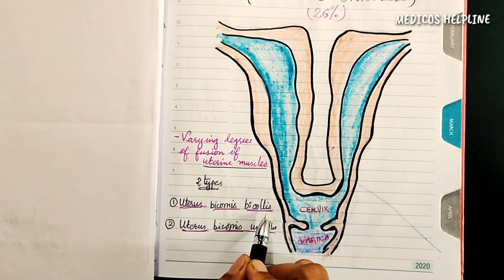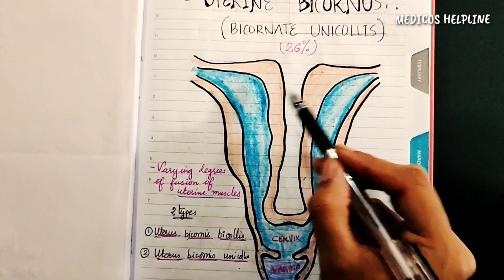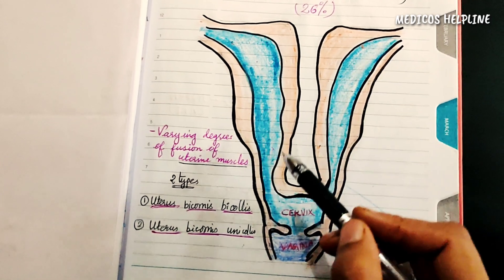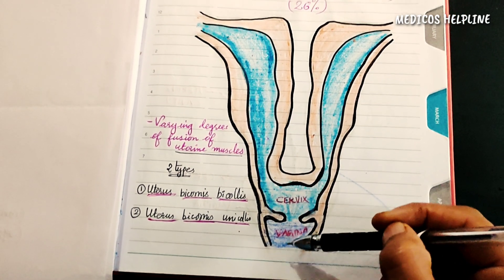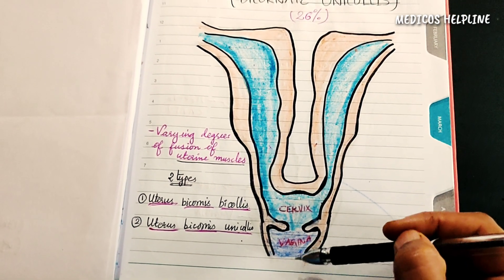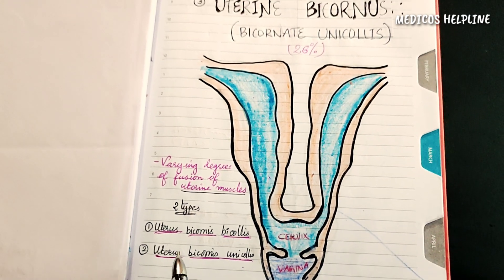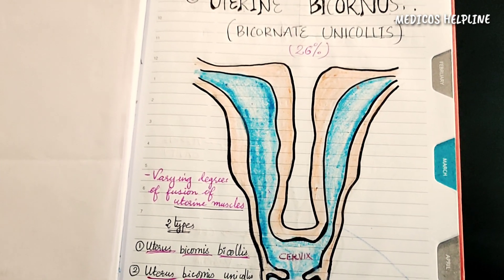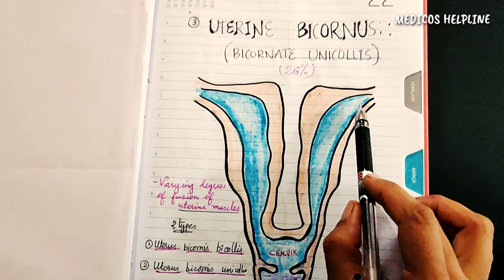They are of two types: uterus bicornuate bicollis and uterus bicornuate unicollis. In uterus bicornuate bicollis, there are two separate uterine bodies with double cervix, with or without a vaginal septum. Whereas in uterus bicornuate unicollis, there are two separate uterine bodies with a single cervix.